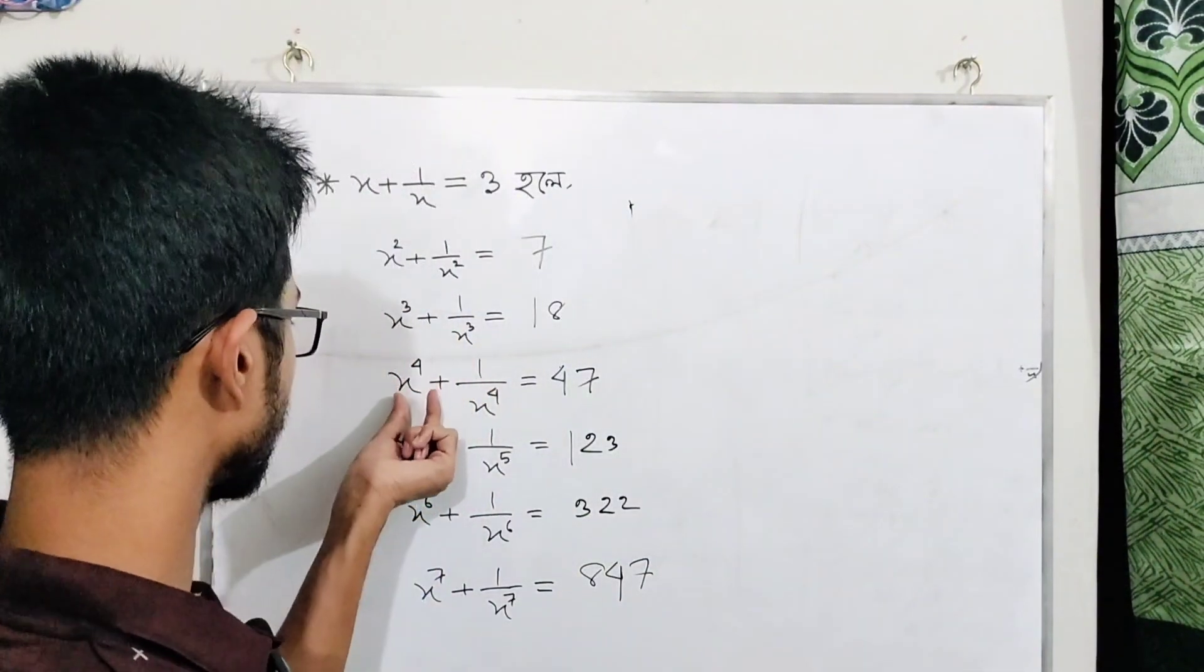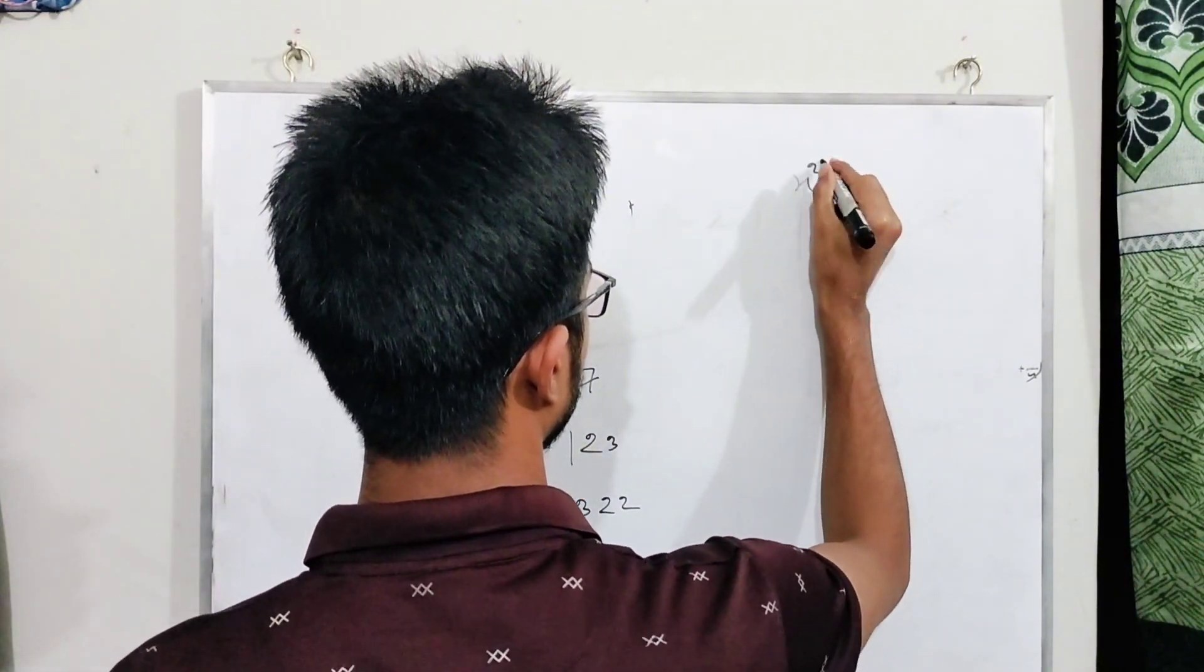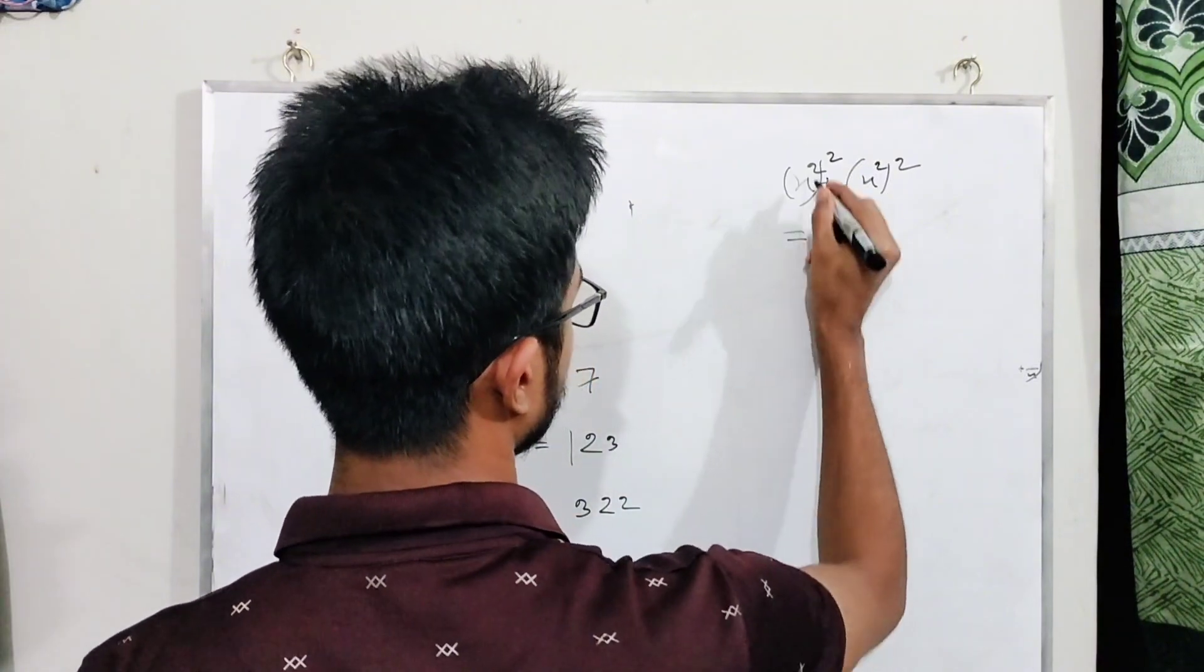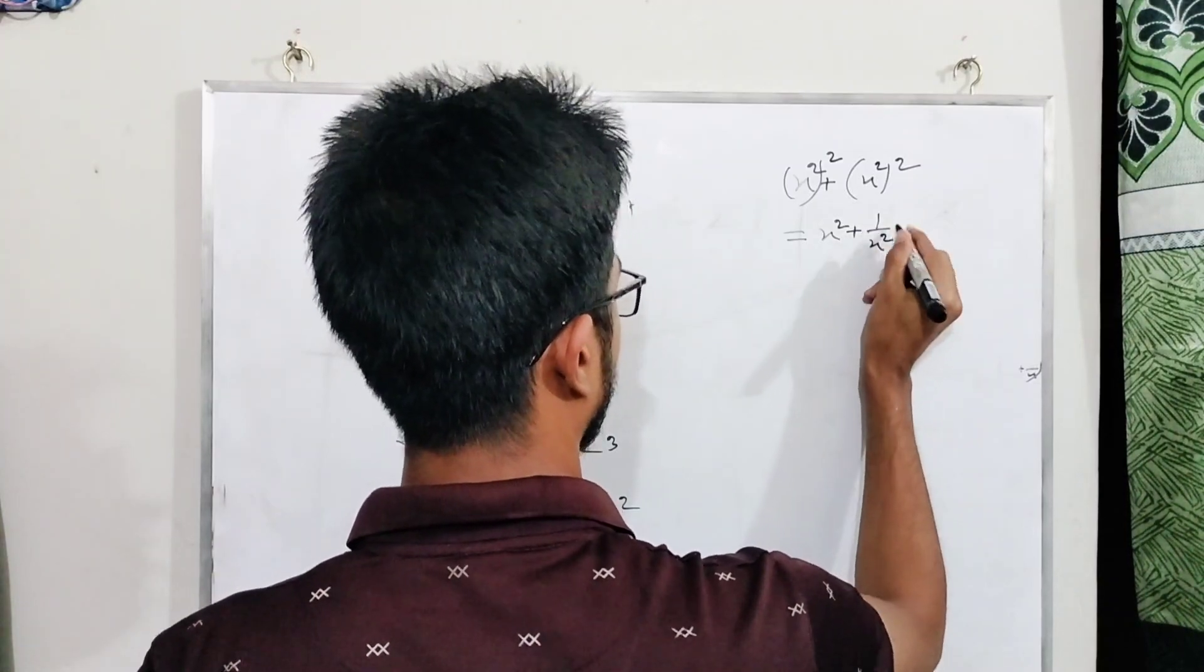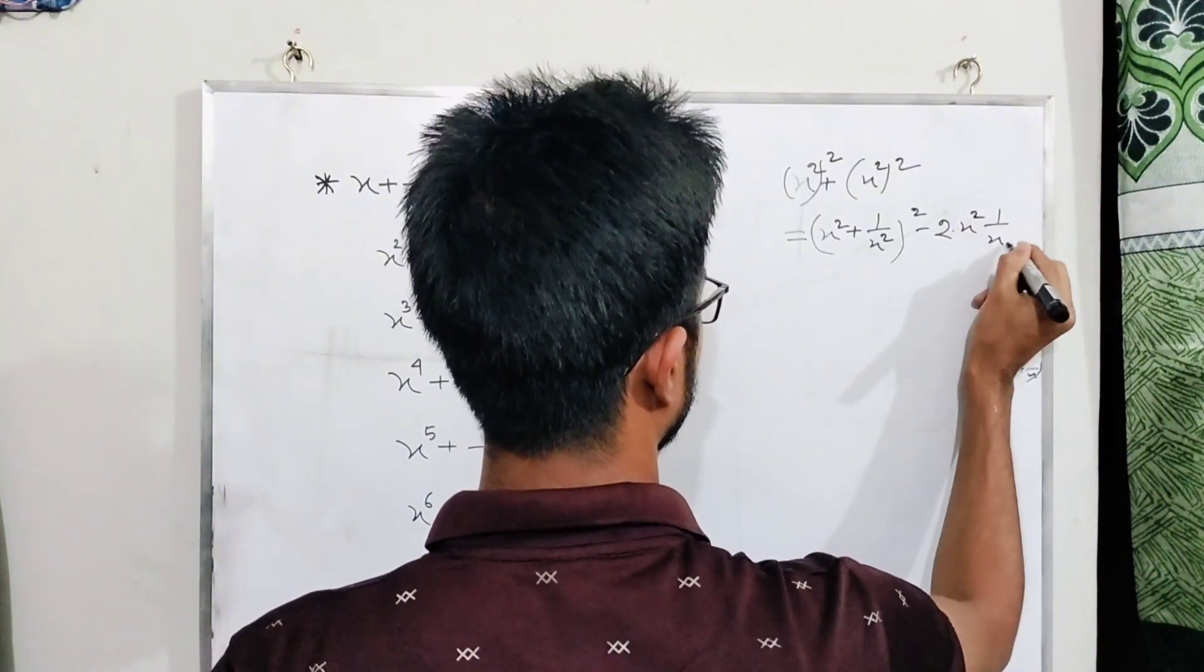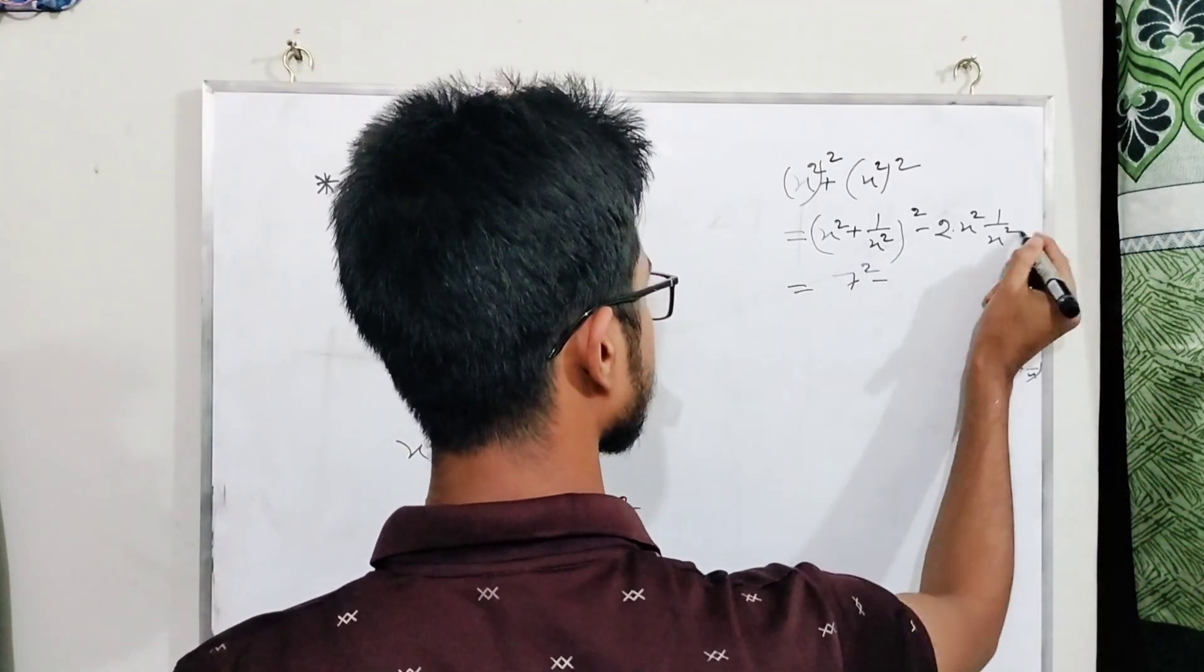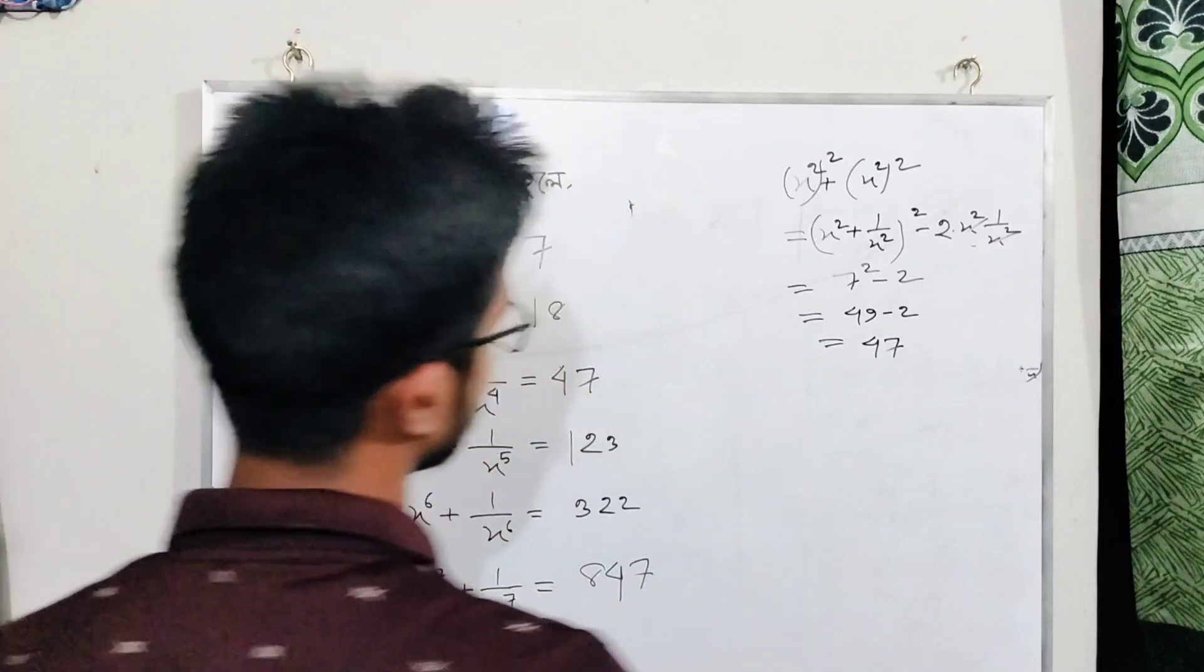Now for x to the power four plus one by x to the power four, we use the formula: (x square plus one by x square) whole square minus two. This equals (a plus b) whole square minus twice ab. Since we found x square plus one by x square equals seven, we have seven squared minus two, which equals forty-nine minus two equals forty-seven.